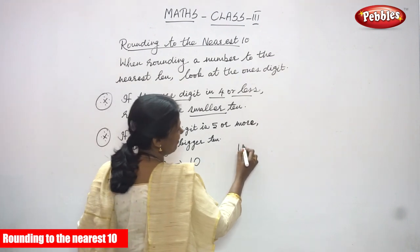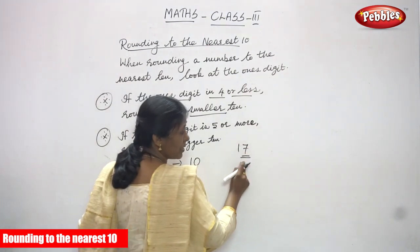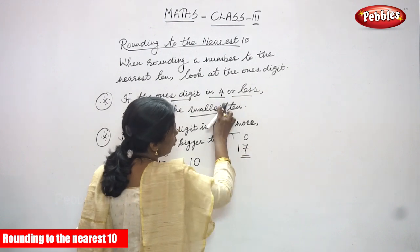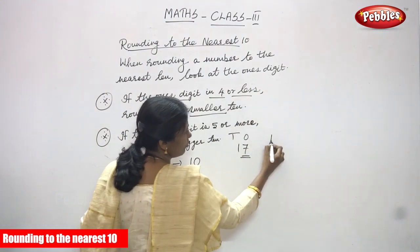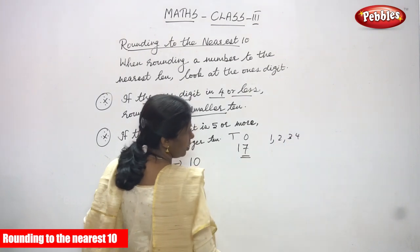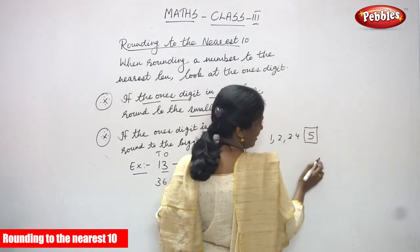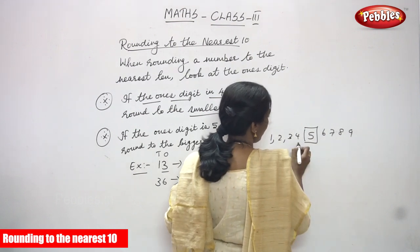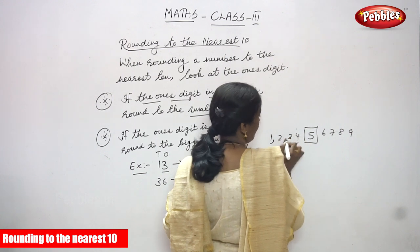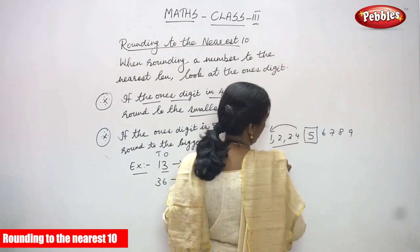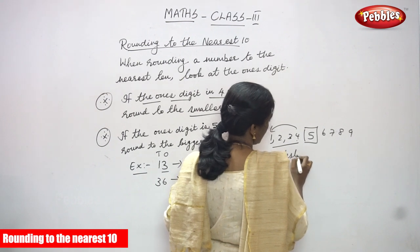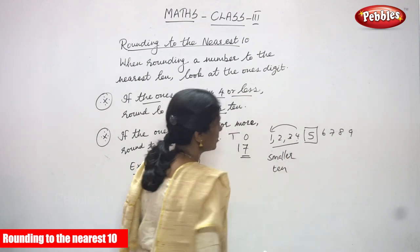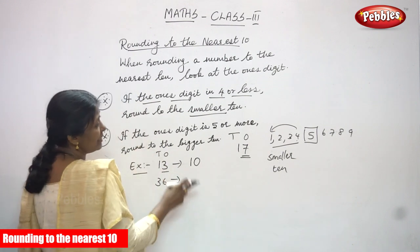Next, suppose the number is 17. You have to consider only the ones digit. The ones digit is 7. Now, 4 or less means 1, 2, 3, 4 — and 5 is the middle number — then 6, 7, 8, 9. So if the number is 4 or less, you have to round the digit to the smaller 10.